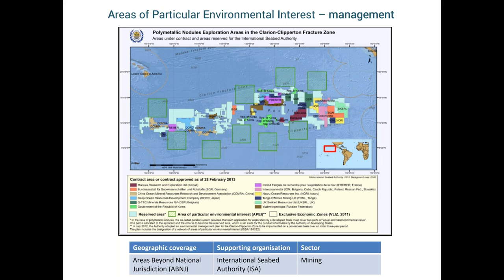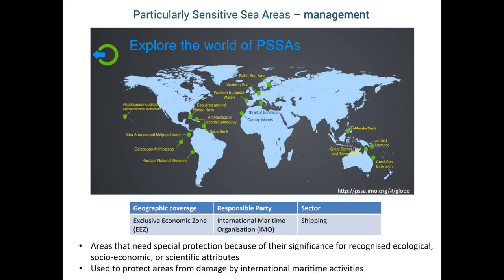Particularly Sensitive Sea Areas, PSSAs, are also a management tool. To be designated a PSSA, an area needs to meet at least one of 17 specific ecological, socio-economic, or scientific criteria, and be at risk from international shipping activities. Currently these tools are only applied within national jurisdiction because of the challenges of ABNJ governance frameworks.